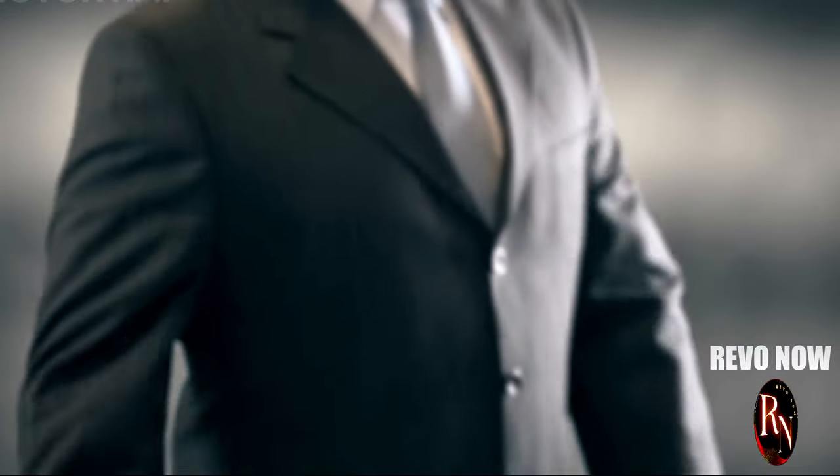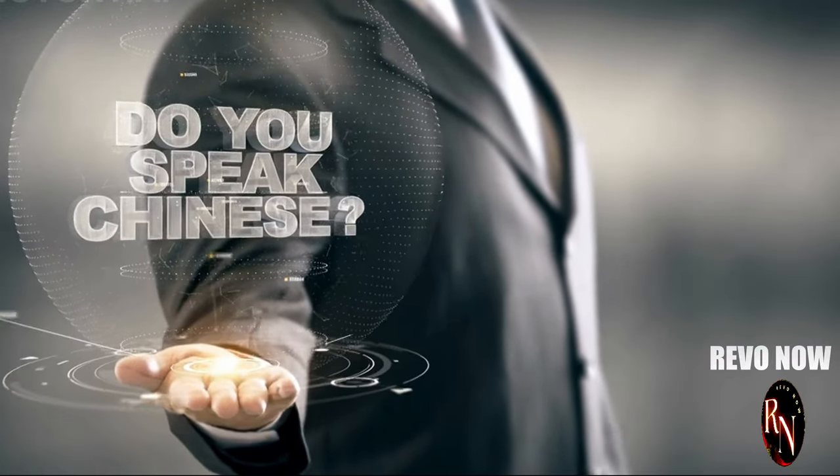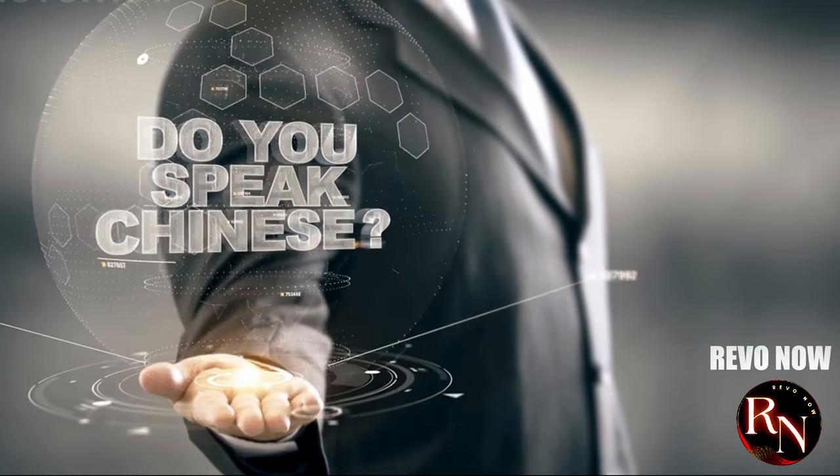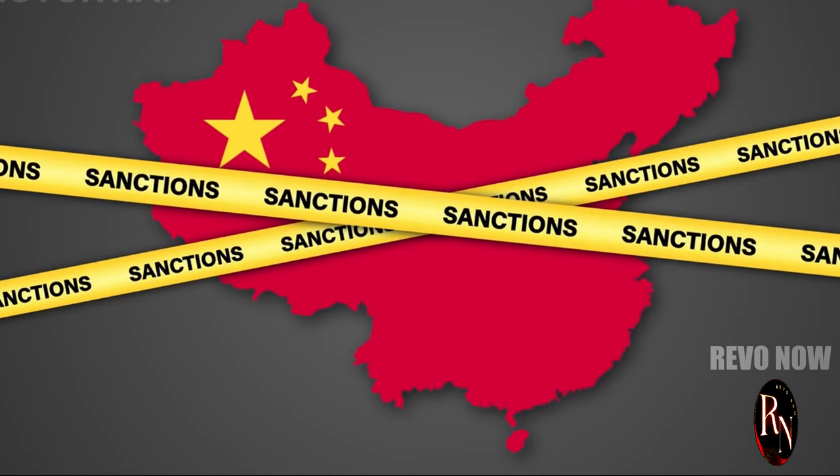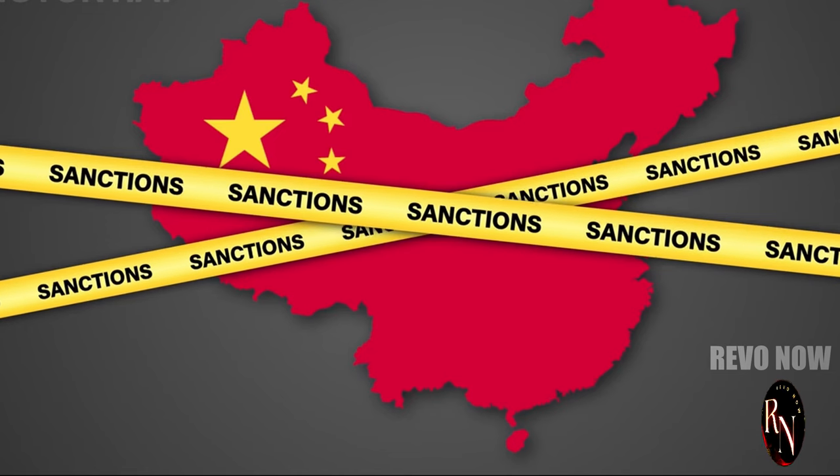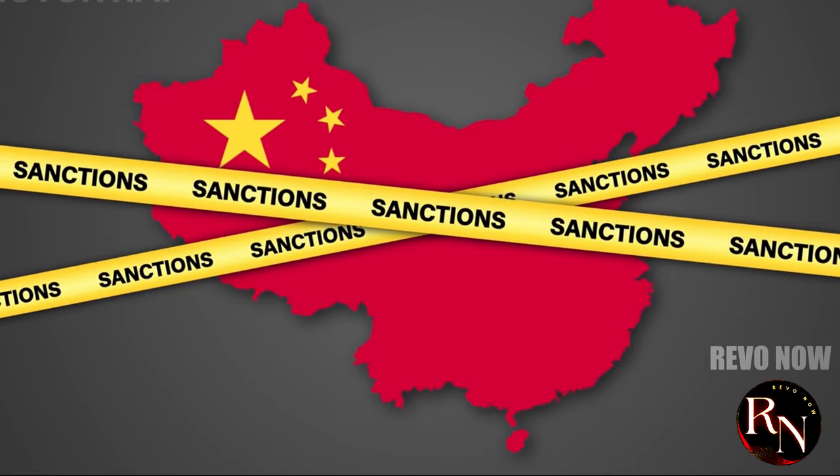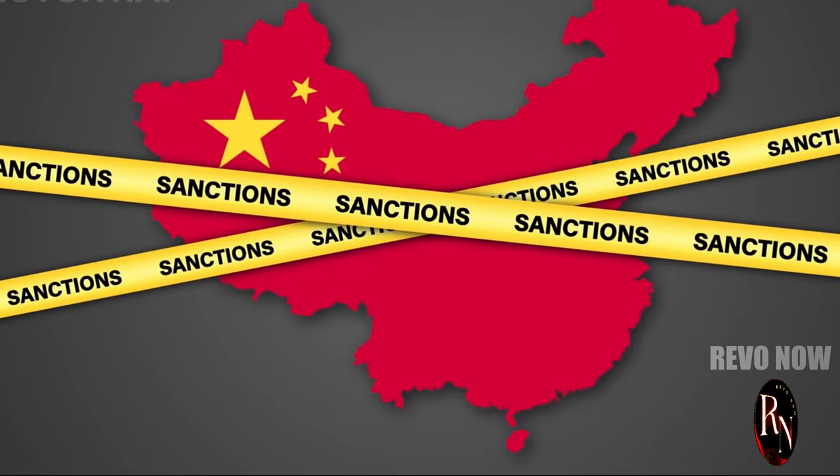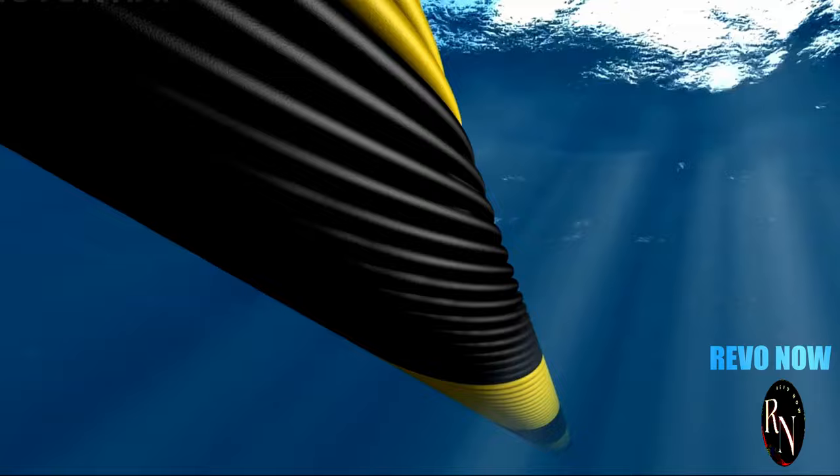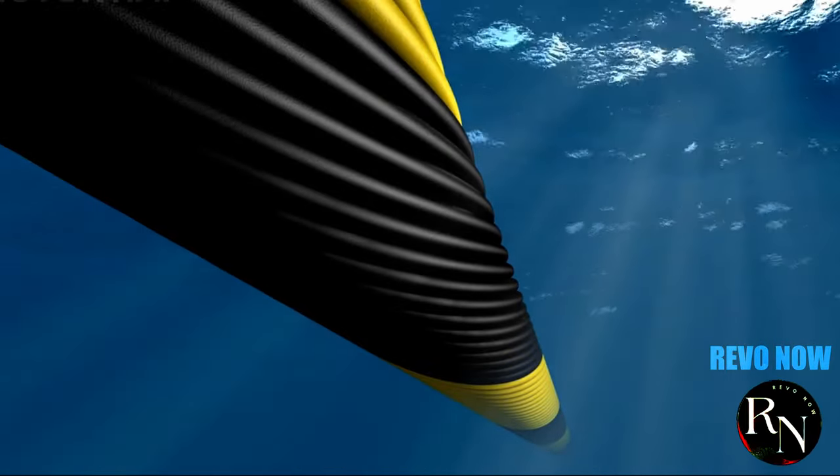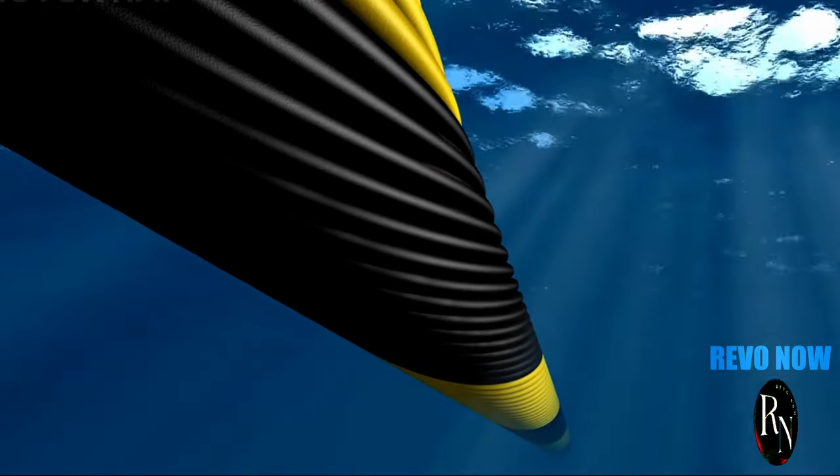You won't believe what China just did to the USA. China is making waves, but not the kind you're thinking of. In a bold move that's shaking up the global tech world, China is defying US sanctions and building its own undersea cable empire. This isn't just about connecting countries, it's about power, control, and the future of the internet.